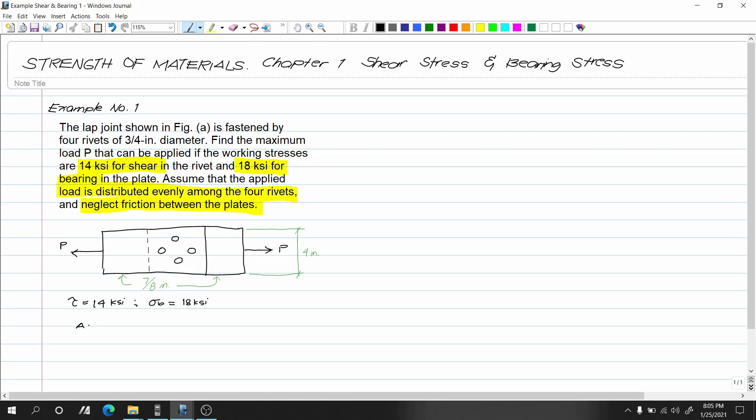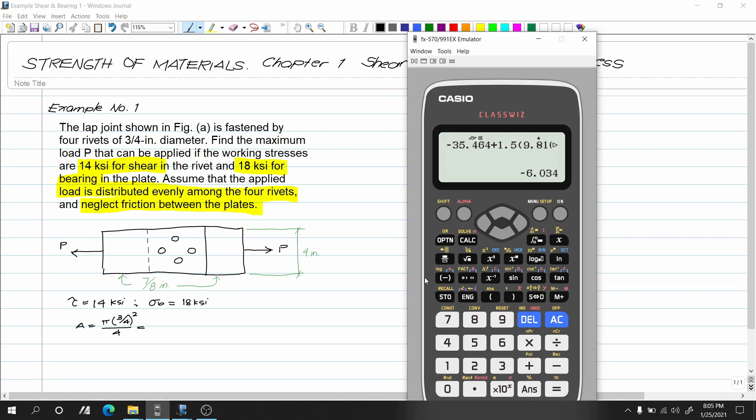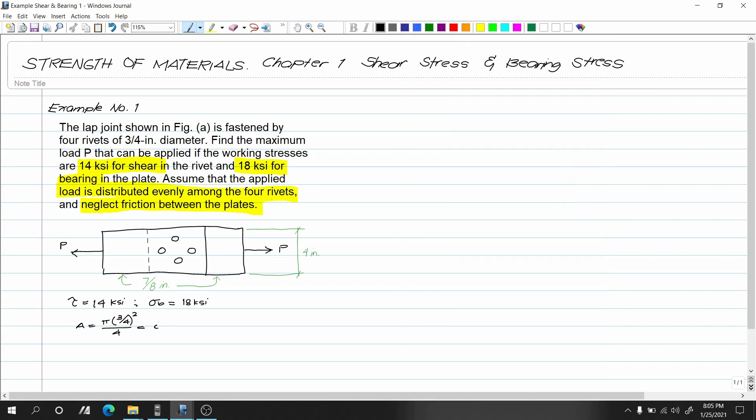Now let's find the area of the rivets. The area equals πd²/4, where d equals 3/4 inch. So π/4 multiplied by (3/4)² equals 0.442 inch squared.